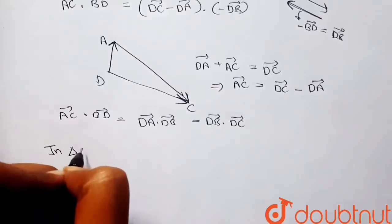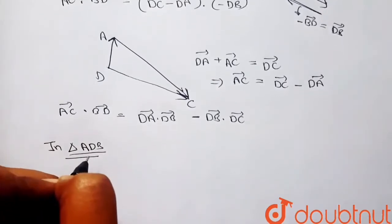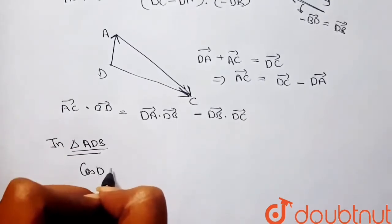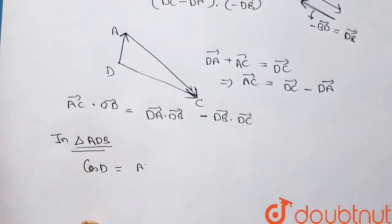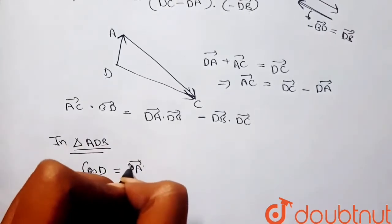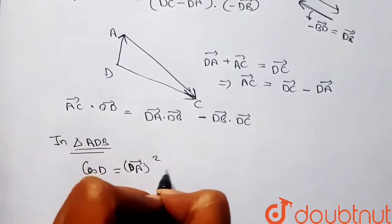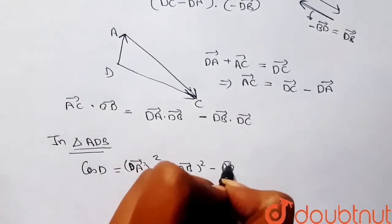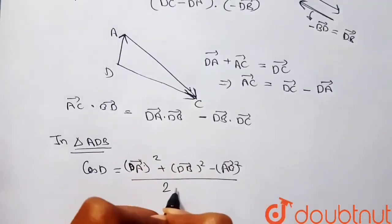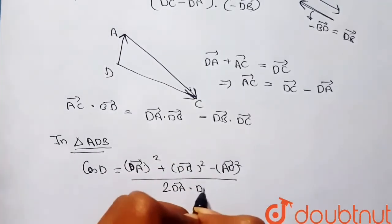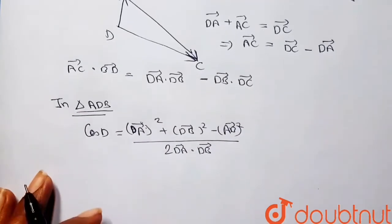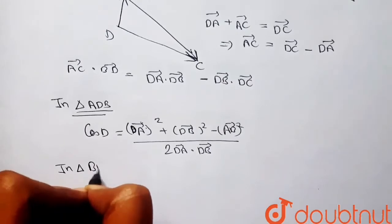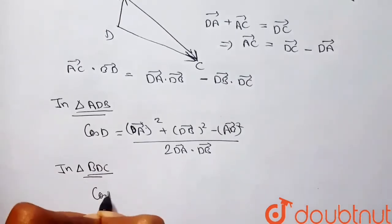Now in triangle ADB, if I use the cosine rule, cos of angle ADB equals DA squared plus DB squared minus AB squared, all divided by 2 times DA times DB.